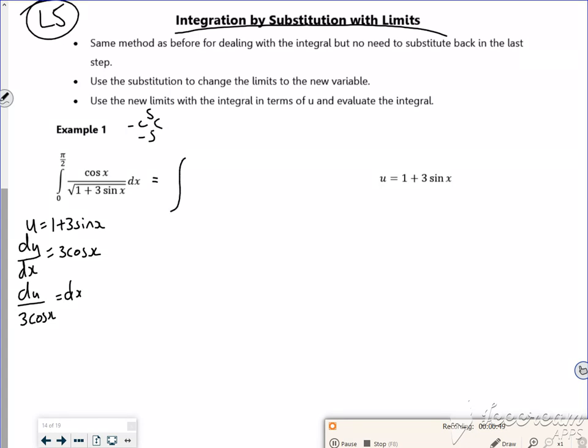So I'm going to replace the bit inside the square root. The 1 plus 3 sine x, that's going to become u. I'm going to replace the dx as well. So that's going to be root u, so u to the half on the bottom. That's going to be multiplied by du over 3 cos x.